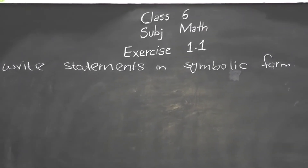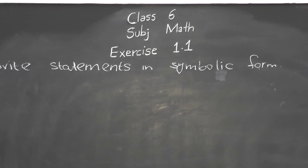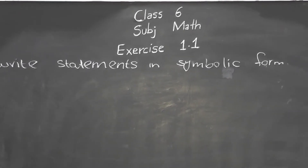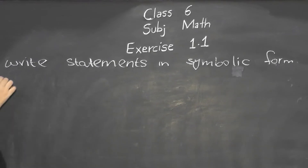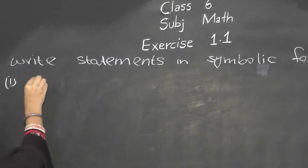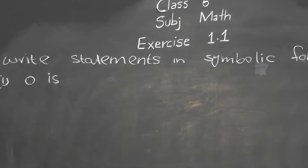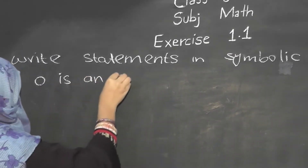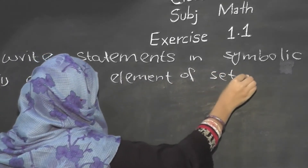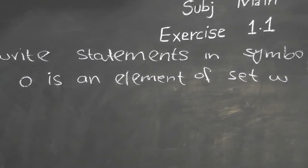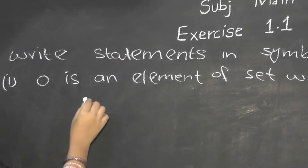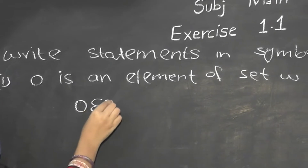In question number 3, you were given a statement and had to put a 'belongs' or 'doesn't belong' sign. Now in question number 4, the statement says: '0 is an element of the set W.' So, as we learned in questions 2 and 3, we write: 0 belongs to W.